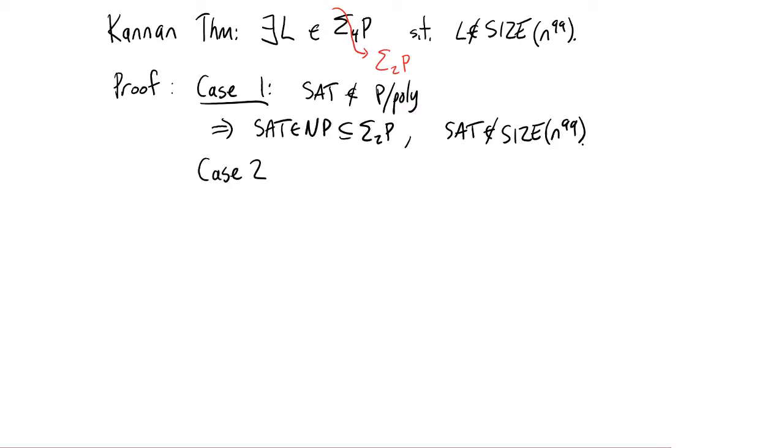What is case two? Well, case two is simply the opposite of case one, SAT is in P slash poly. Now of course, SAT is NP complete. So it's easy to see that that implies that all of NP is in P slash poly. And that's exactly the scenario considered by the Karp-Lipton theorem that we proved in class.